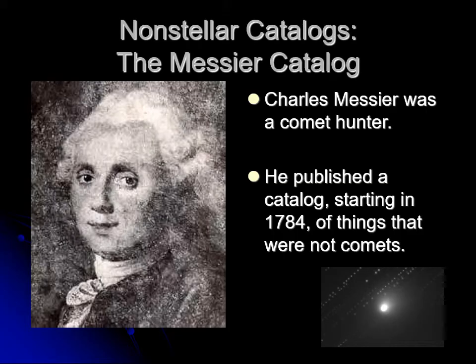Charles Messier, an astronomer in the 18th century, was a comet hunter searching for comets. Most comets look like little faint fuzzy things in the sky — not the big ball with a huge tail you might imagine, but barely visible little smudges. He noticed, though, that some smudges did not move around the sky like a comet would — they just stayed in one spot.